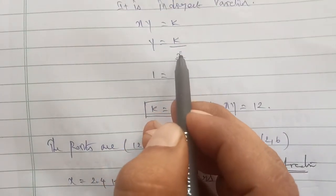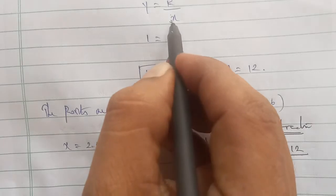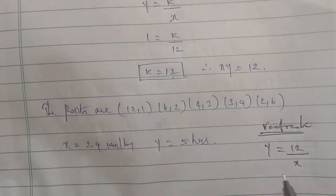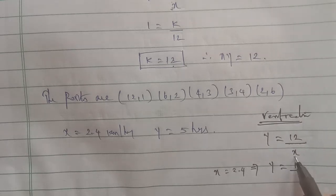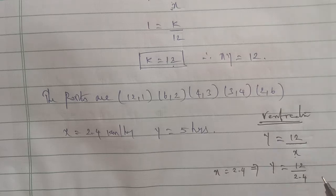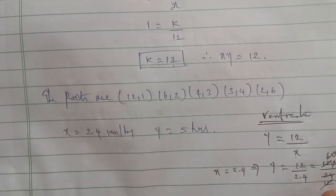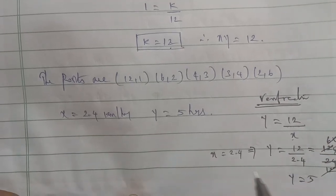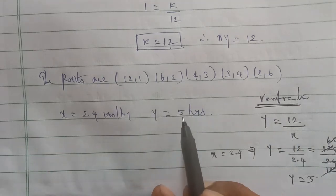To verify: y = k/x, that is y = 12/x. When x = 2.4, then y = 12/2.4 = 5. So y = 5. This confirms our graph answer. If x = 2.4, then y = 5. This is the verification. The graph gives the same answer. Thank you.